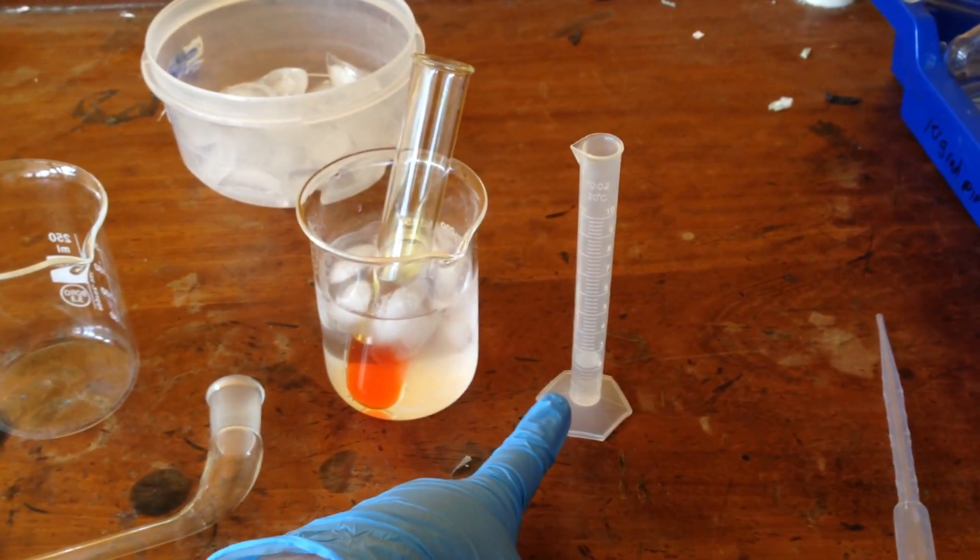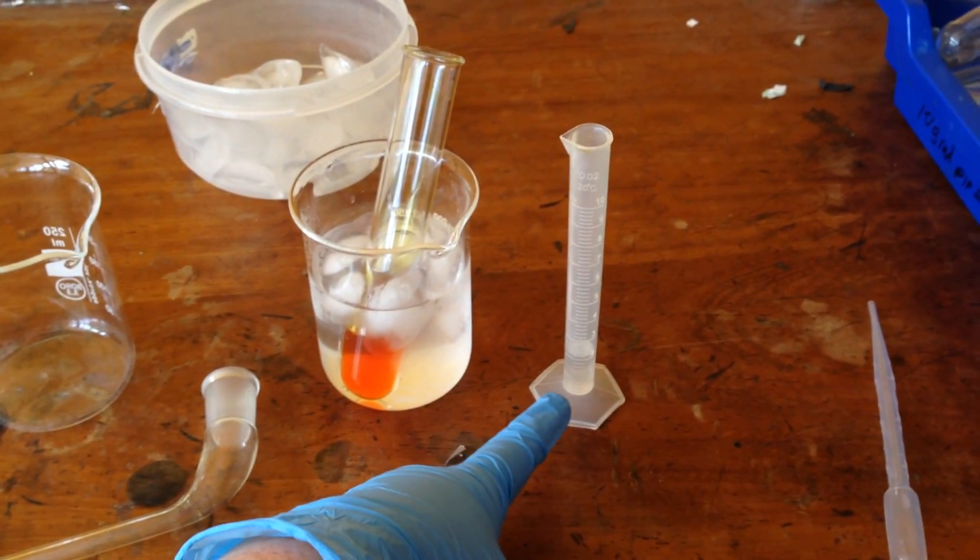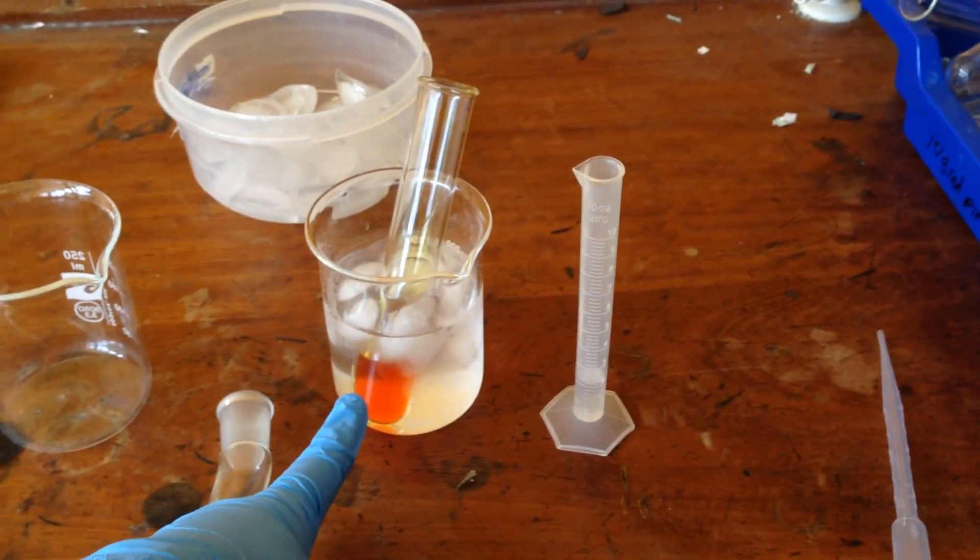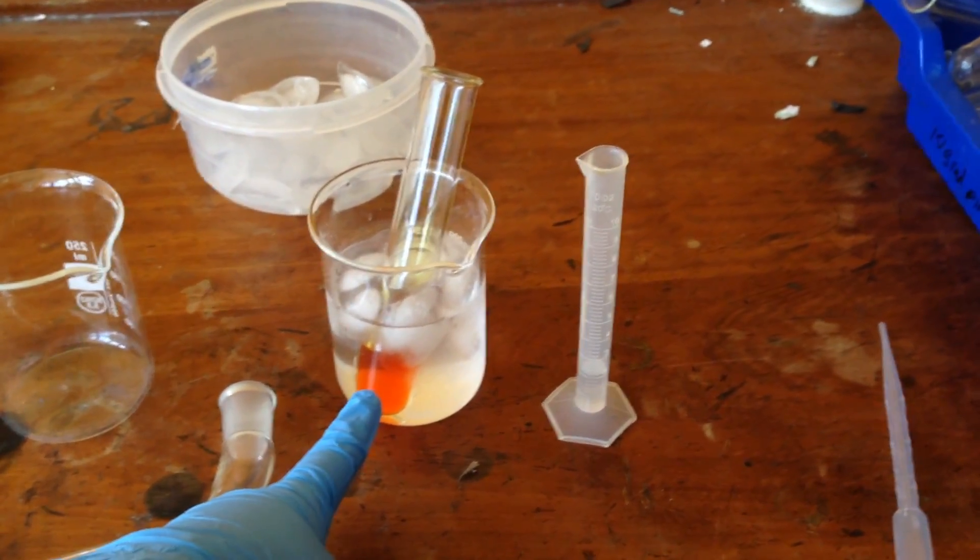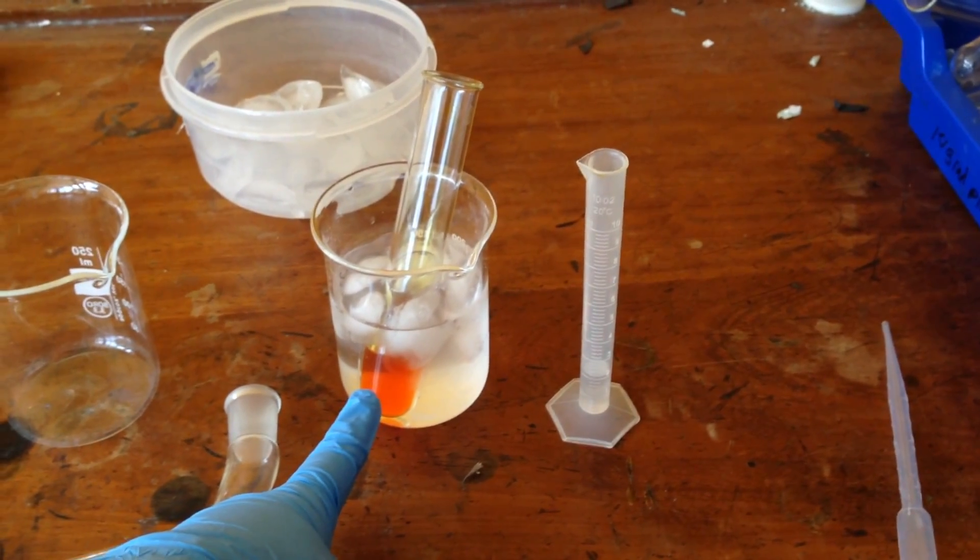What I'm going to do now is very, very slowly, drop by drop, add the ethanol into the potassium dichromate, swirling after every single drop to make sure that it's mixed properly.